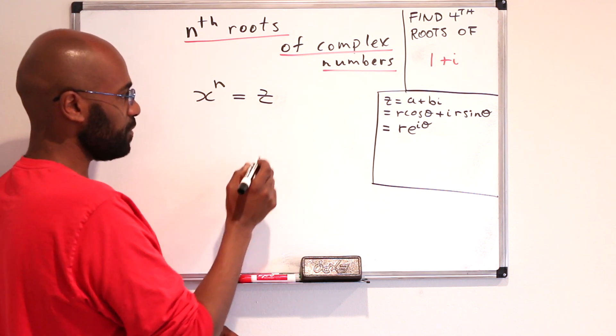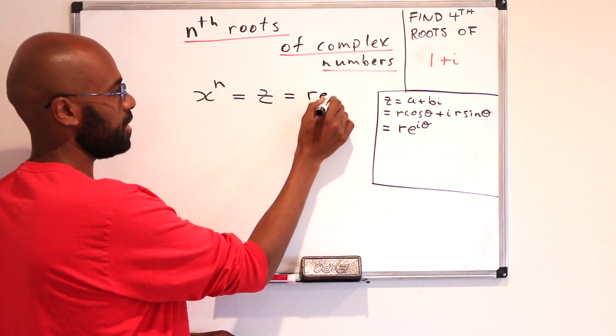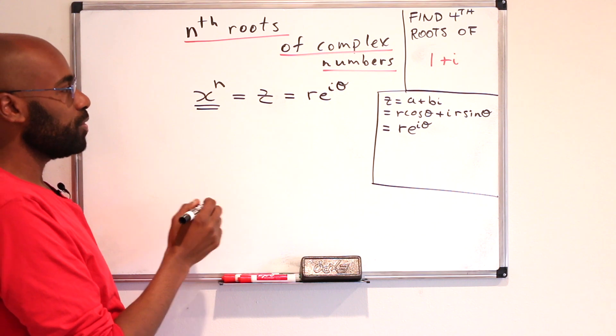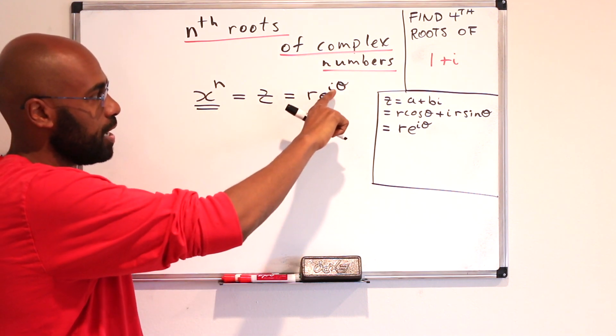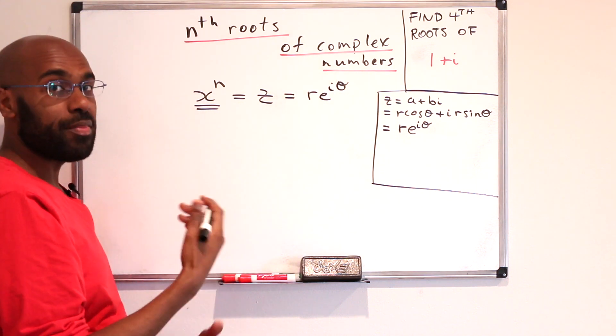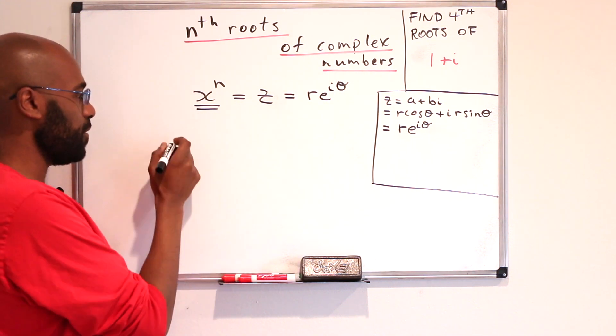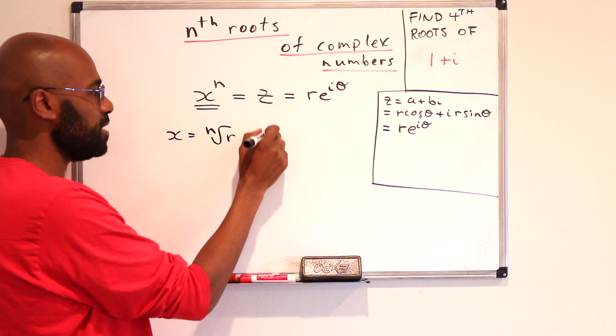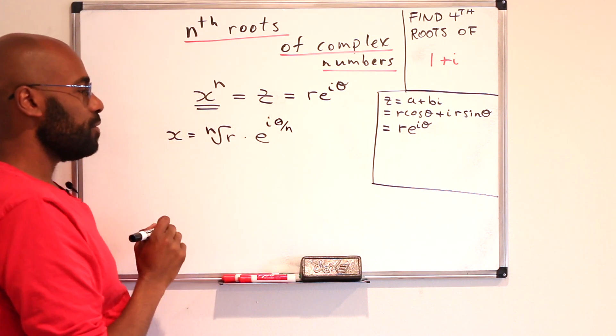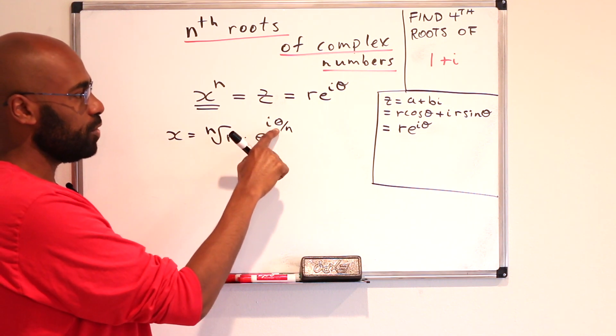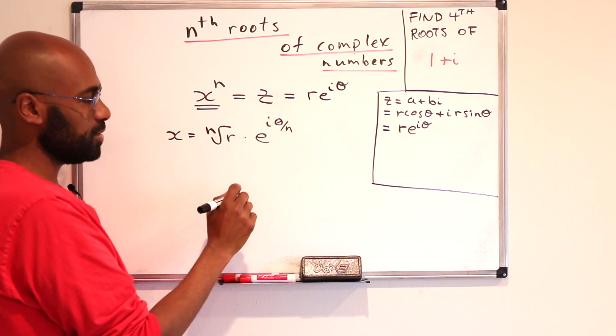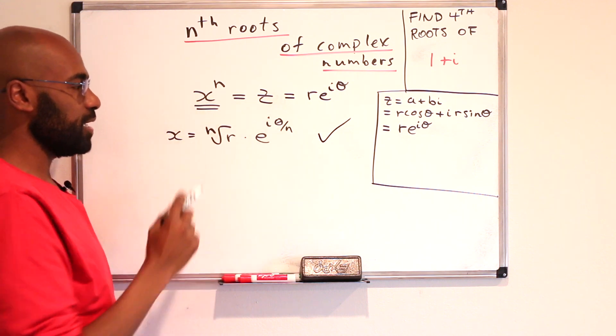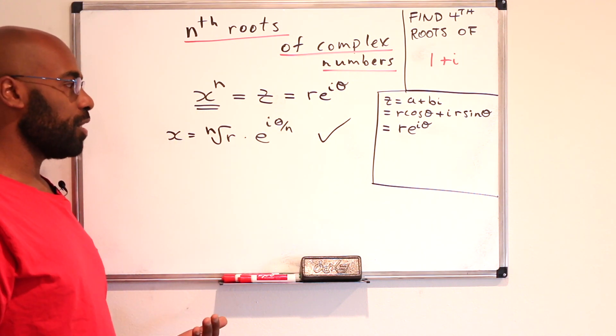Now, let's write this z that we have in polar form. So, it's r e to the i theta. And then let's think about complex numbers that would actually satisfy this equation. So, one example is to take the nth root of r, and then the nth root of this thing right over here. If we set x to be the nth root of r times e to the i theta over n, then when we raise this to the nth power, we'll get r, and we'll get here e to the i theta by multiplying the exponent by n. So, this is one of the complex roots of this thing. There are n minus 1 roots left.